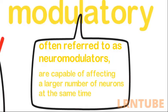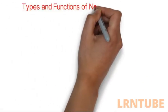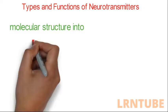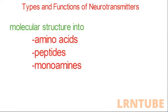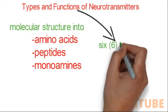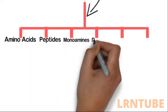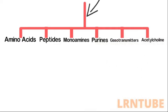Now that we've learned about the classification of neurotransmitters, we're going to learn about the types and functions. For each neurotransmitter, we'll cover the functional class, location, functions, and symptoms of lack or excess. The most common way to categorize neurotransmitters is by molecular structure into amino acids, peptides, monoamines, and others. In this video, we'll classify them into six groups: amino acids, peptides, monoamines, purines, gasotransmitters, and acetylcholine.